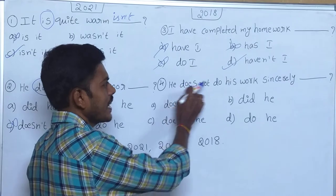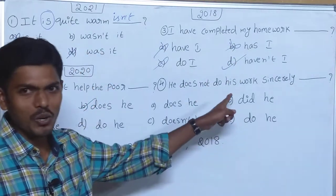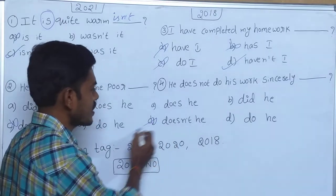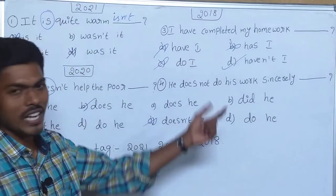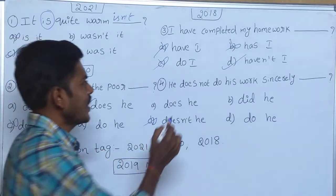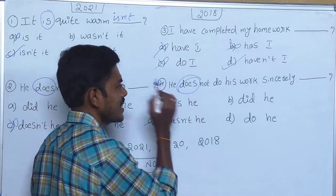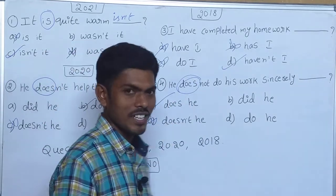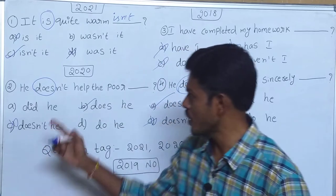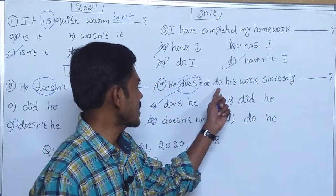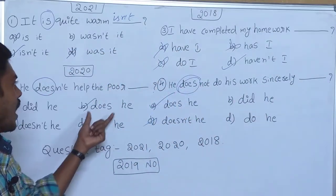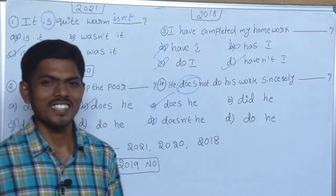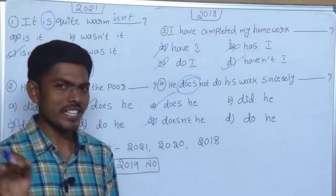Fourth one: 'He does not do' — this is negative, so our answer is positive. Three positive options are there, but how to find the correct one? The helping verb here is 'does,' so the answer with 'does' is correct. Question tags are very easy. Later we will discuss these in detail — these are the previous exam questions.